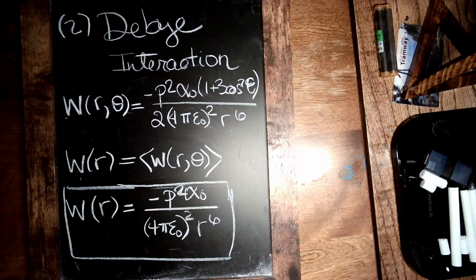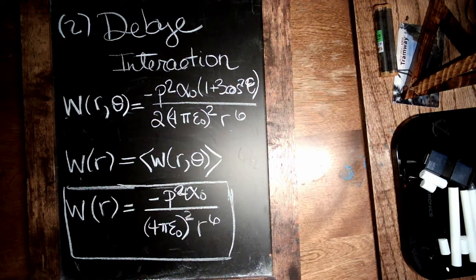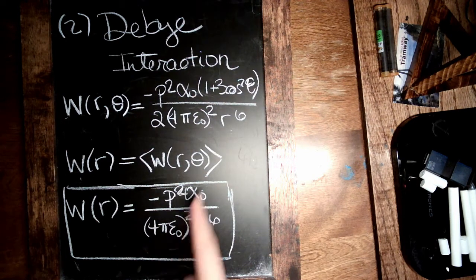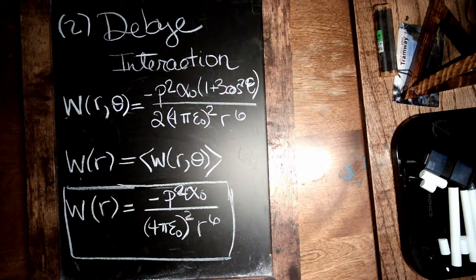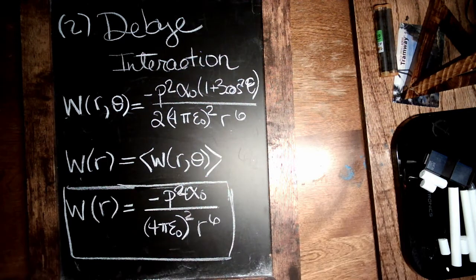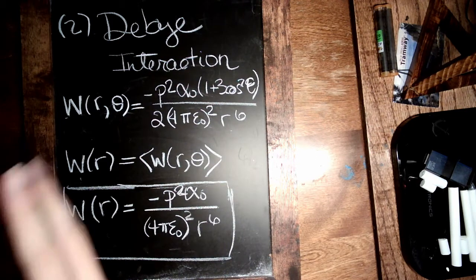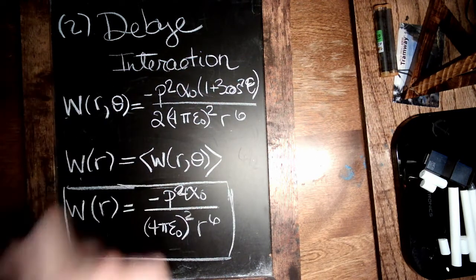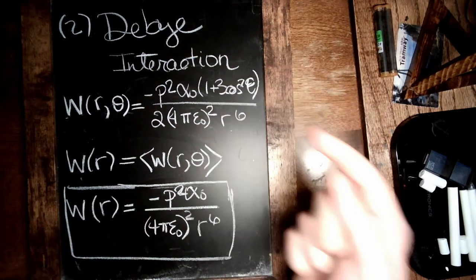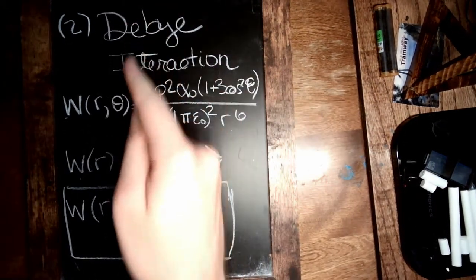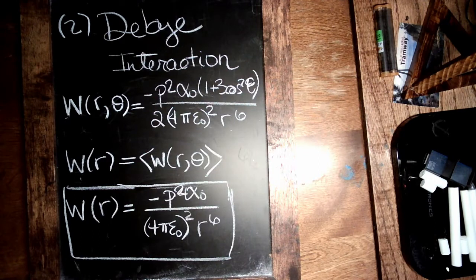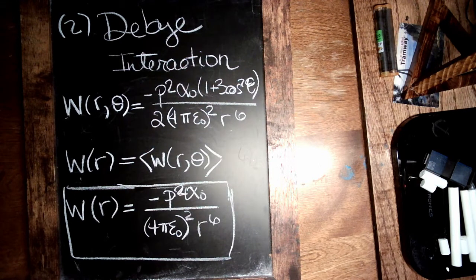But we can make this a little bit more general and say maybe alpha zero is not the same for both of the molecules. In this effect, there's some mutual induction going on, in which case the dipole of the first one, which is permanent, will induce a dipole on the second one, which can in turn affect the dipole of the original molecule. So we can make this a little bit more general.